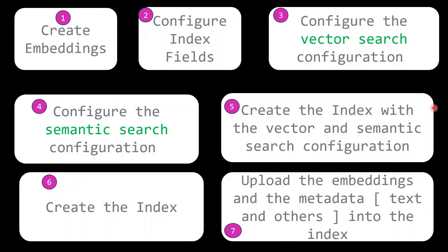So how does it happen? We break the whole process into seven steps for uploading the embeddings: first we create the embeddings, then we configure the index fields, configure the vector search configuration, configure the semantic search configuration, create the index with the vector and semantic search configuration, and finally upload the embeddings and metadata into the index.